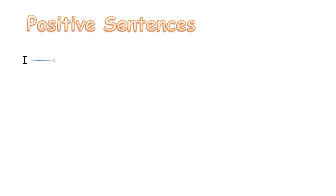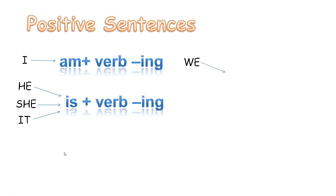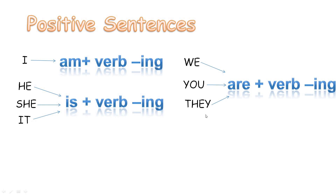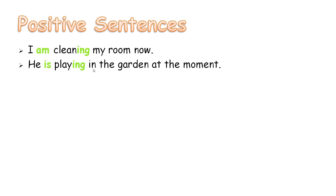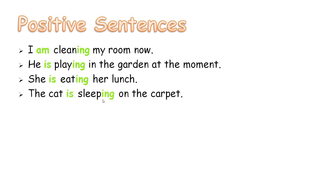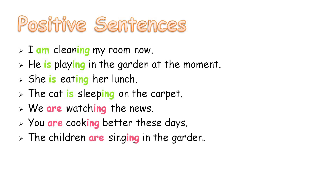And how can we make positive sentences with the present continuous tense? We use 'am + verb-ing' with I. We use 'is + verb-ing' with he, she, and it. We use 'are + verb-ing' with we, you, and they. Examples: I am cleaning my room now. He is playing in the garden at the moment. She is eating her lunch. The cat is sleeping on the carpet. We are watching the news. You are cooking better these days. The children are singing in the garden.